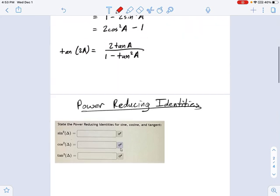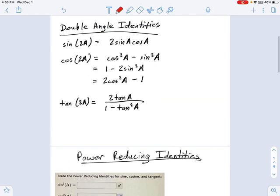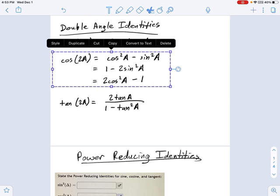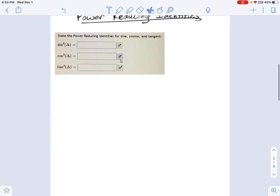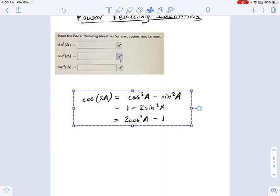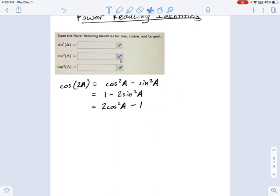You can actually do this using the double angle identities. There's a special double angle identity, cosine of 2A. It's going to come in really handy for us, so I'm just going to copy those identities, bring them down here so we can use this. And in particular,